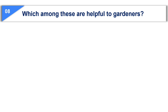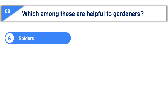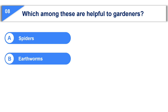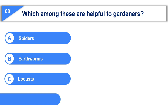which among these are helpful to gardeners? Option A, spiders. Option B, earthworms. Option C, locusts. Option D, both A and B.